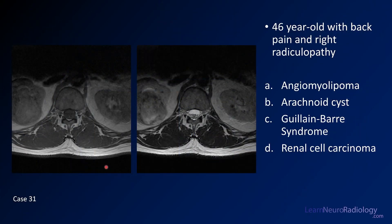Case 31 is a 46-year-old man with pain and right-sided radiculopathy. We have two images through the lumbar spine: T1 and T2 axial images. The choices are angiomyolipoma, arachnoid cyst, Guillain-Barré, and renal cell carcinoma.